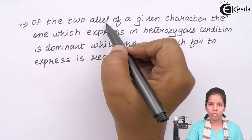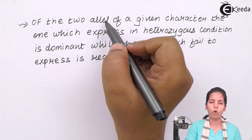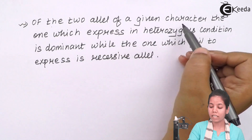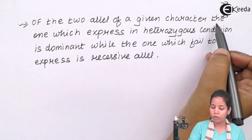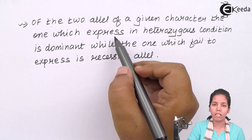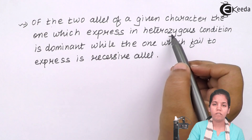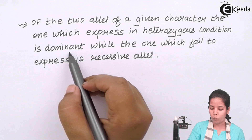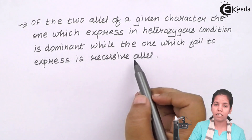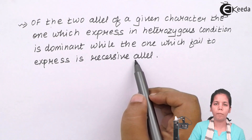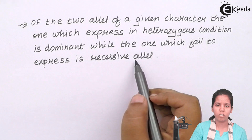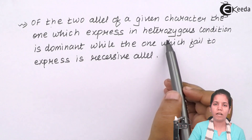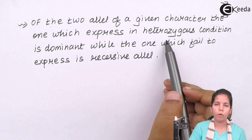According to Mendel's law, of the two alleles — or in simple language, the two genes — for a particular character there are two sets of genes present. Of the two alleles for a given trait, the one which expresses itself in heterozygous condition — that is mixed condition, where the gametes are capital T small t — is called the dominant allele. Whereas the one which fails to express is the recessive allele. So if the genotypic makeup of a plant in any generation, for example in F1 generation, is capital T small t — that is a heterozygous condition — the plant will always show dominant height.